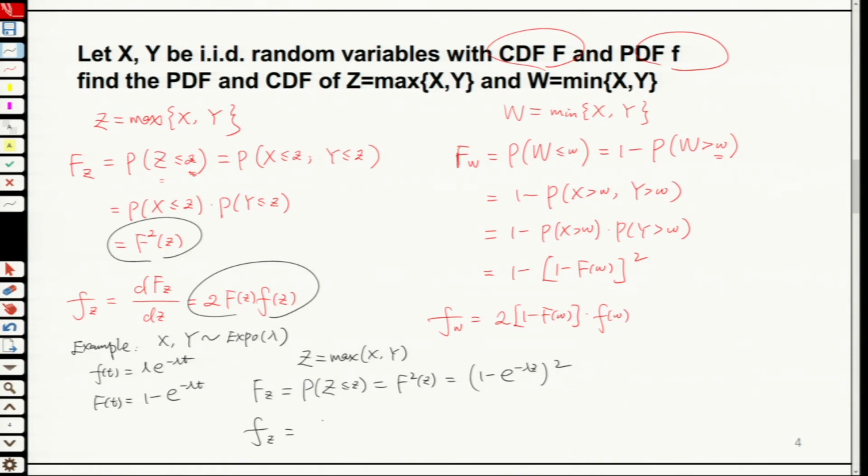Now what is fz? fz equals to 2f(z) and then F(z). So this will equal to 2 times 1 minus exponential minus lambda z times lambda exponential minus lambda z. So in this case, we were given specifically the PDF function is exponential. Then we will be able to derive the PDF and CDF function for z.